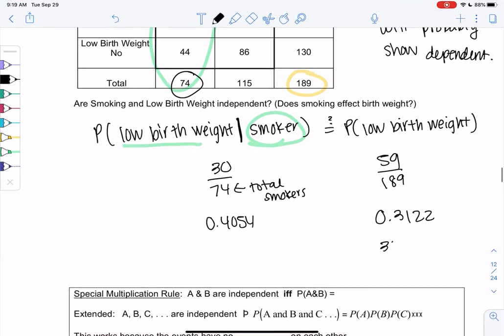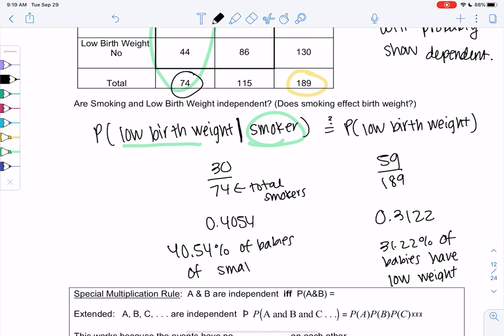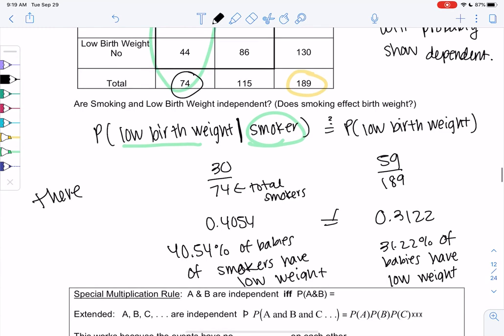So basically what this is saying is 31.22% of babies have a low birth weight, at least in this study. 31% of babies have a low birth weight versus, it's higher for smokers, 40.54% of babies of smokers have low birth weight. Which means there is an effect, right? If there was no effect, these numbers should be the same. So because there's an effect, because these numbers are not equal, they are not independent, which means they are dependent.